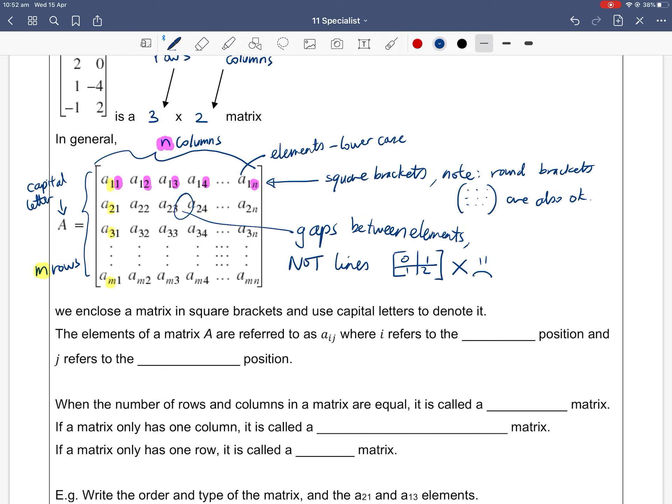We enclose the matrix in square brackets, or round brackets is okay. We use capital letters to denote the whole matrix itself. The elements are lowercase letters with i and j. i, your first number, is always the row position. And j is always the column position. For example, this 3, 2 means it's the third row, second column entry.